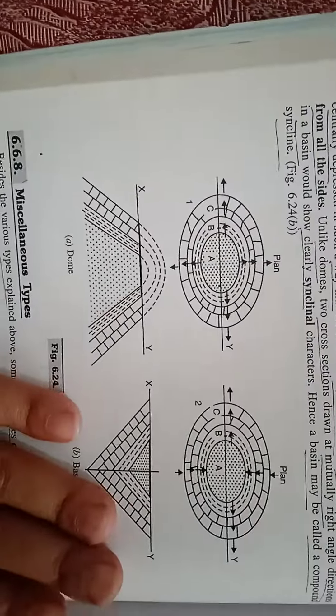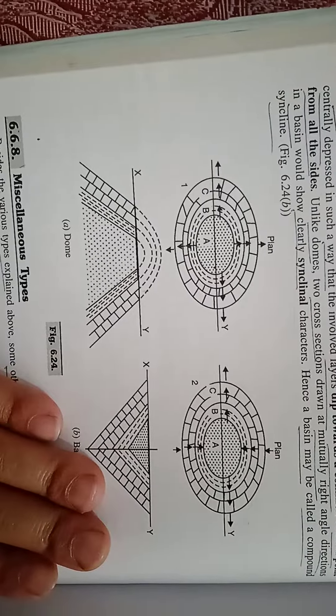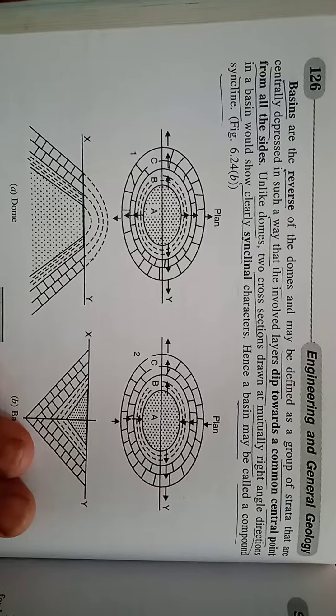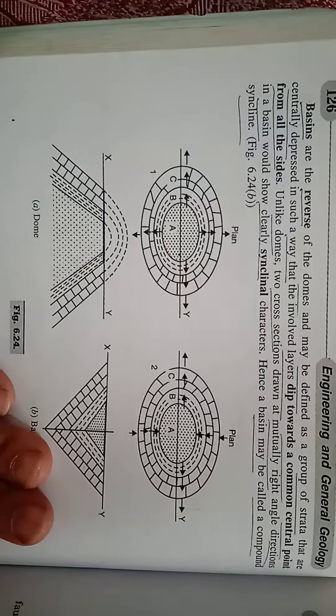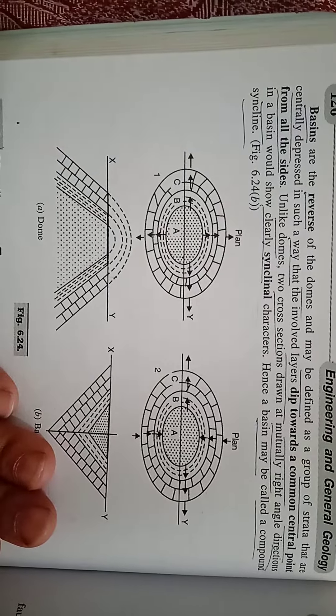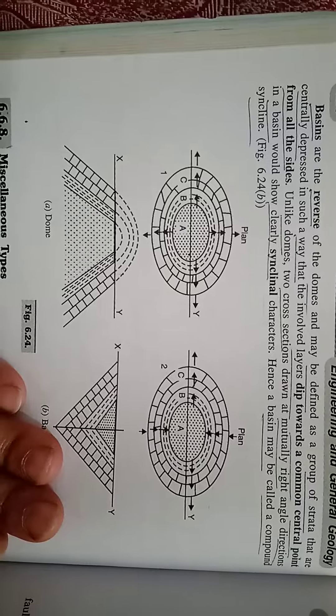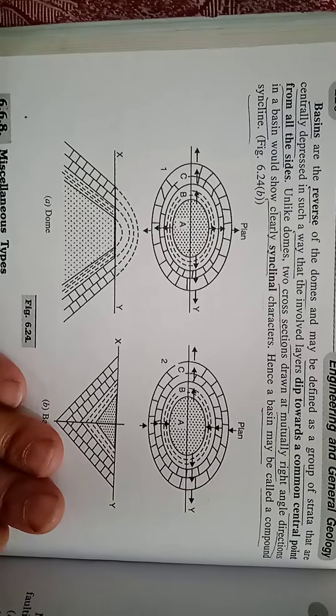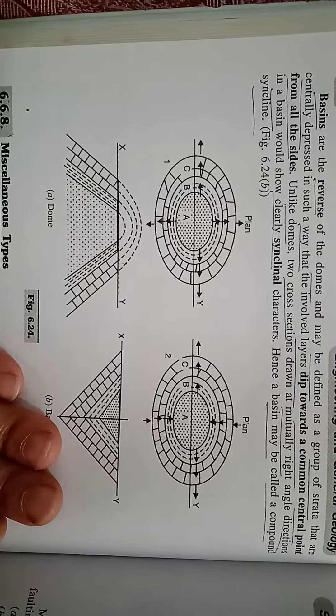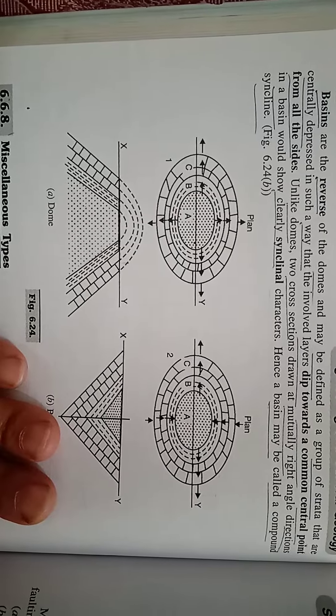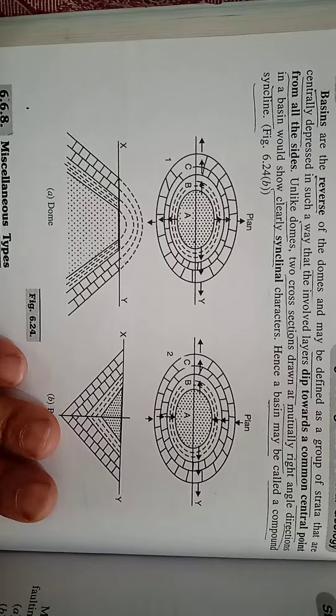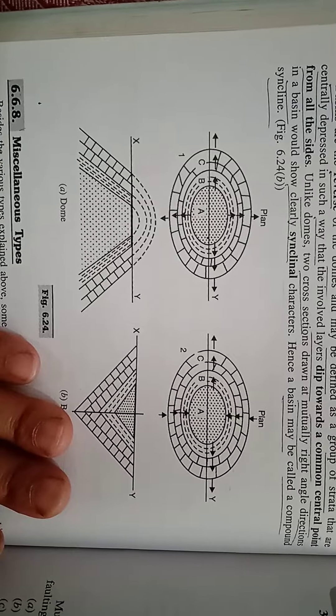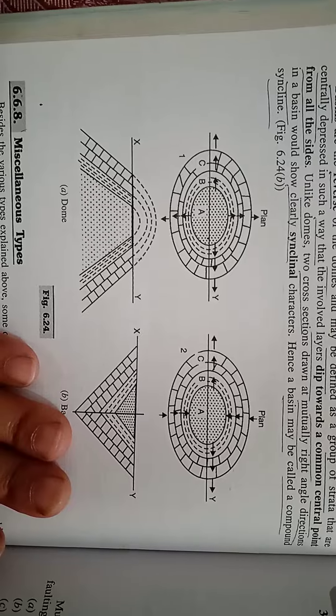Basins are the reverse of domes. They may be defined as a group of strata that are centrally depressed in such a way that the involved layers dip downward toward a common central point from all sides. Unlike domes, two cross sections drawn at mutually right angles in a basin would show clearly synclines. Hence a basin may be called a compound syncline.